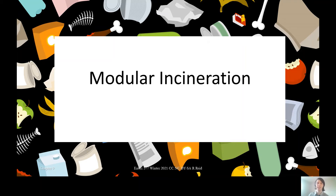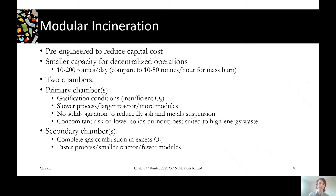The second type of incinerator is a modular incinerator. Modular incinerators have a few advantages: because they're built in modules, they can be pre-engineered to reduce capital costs. You can have a smaller initial capacity and build it up by adding more modules, so you don't have to commit to one big plan right at the beginning.